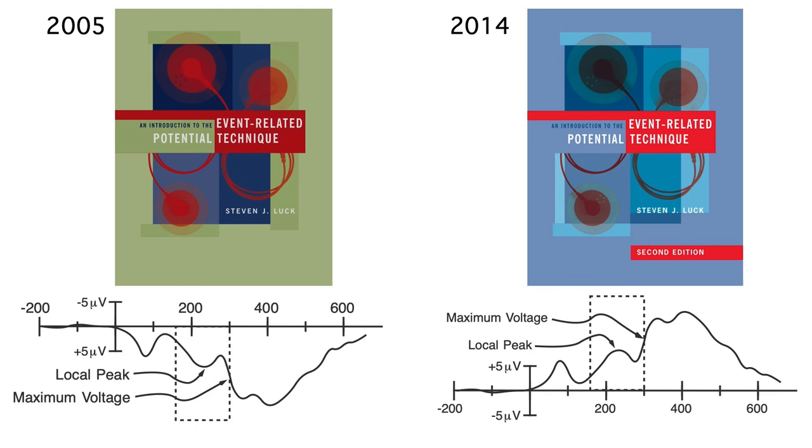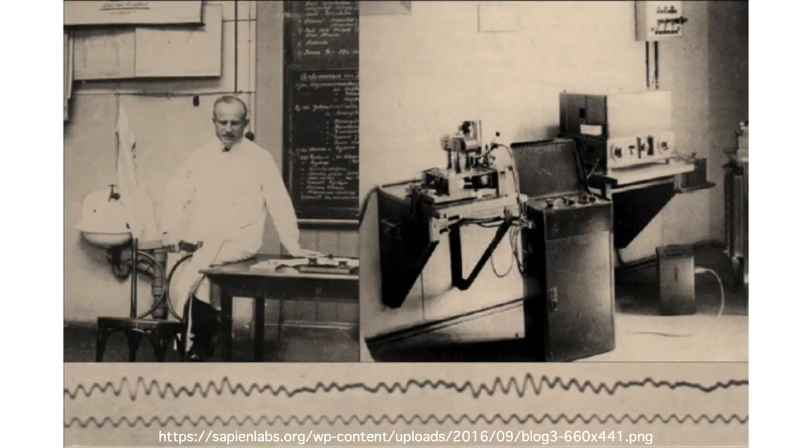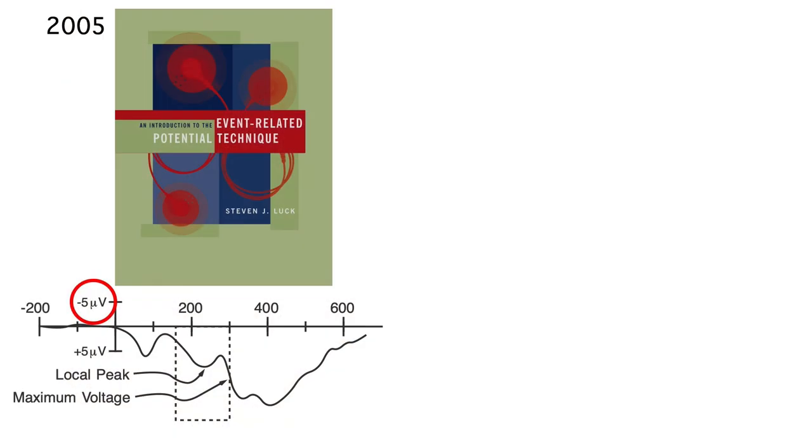In the first edition, all the figures were plotted with negative upward. That's how I was trained to do it back in the 1980s. This odd convention was a result of the nature of the hardware used by early researchers to record EEG and ERPs. These researchers didn't have computers, and it would have been very difficult for them to plot positive upward given the hardware they were using.